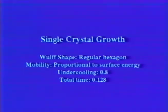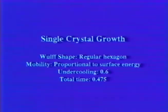The next three examples make use of a wolf shape that is a regular hexagon. Again, we start with heavy undercooling and move to less heavily undercooled. In all the examples shown, the temperature field is computed on an underlying grid of size 200 by 200.